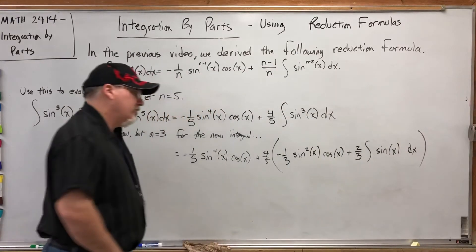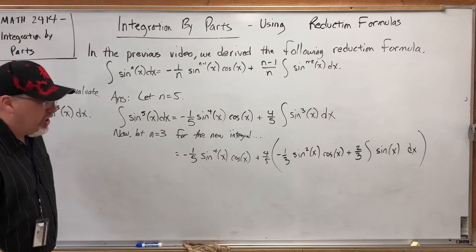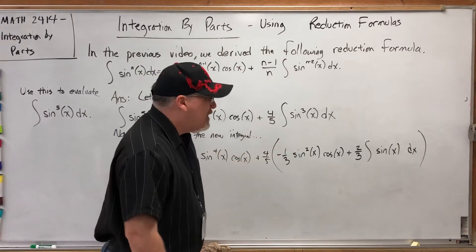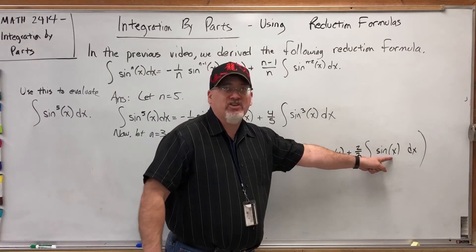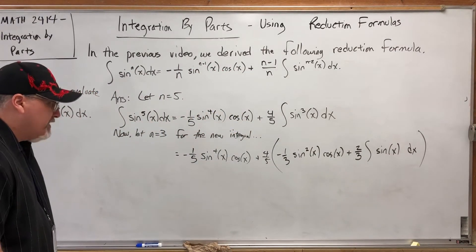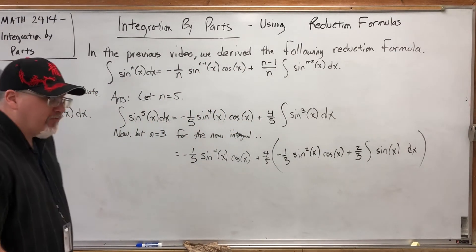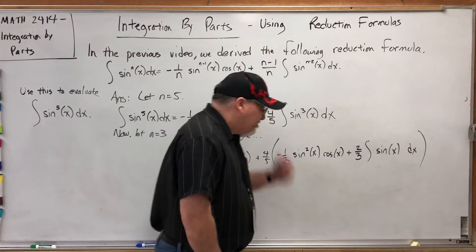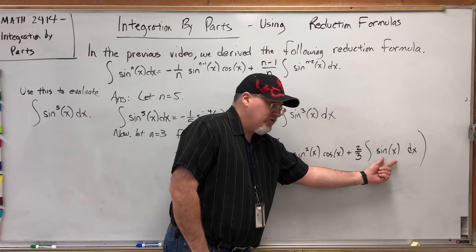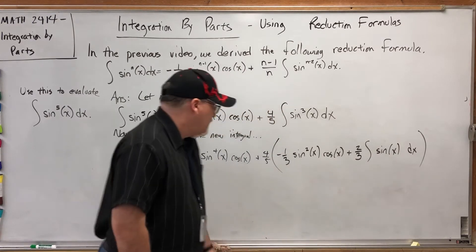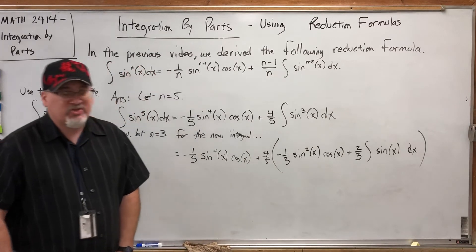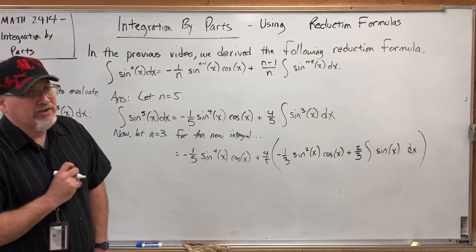Now are we done? No, but we're a lot closer to being done. We've successfully reduced the power again by two, and now we're down to an integral that we can just evaluate. I think we can finish this in one move. This needs to get integrated. The integral of sine is negative cosine, so this will become negative. We need to distribute the four-fifths because the giant parentheses aren't really necessary, and of course don't forget the plus c.